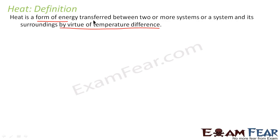Heat is transferred between two objects. When we talk of system and surroundings: system means any object which is under consideration — the particular object under our observation. Anything else other than the system is surroundings. For example, if a cup of coffee is lying on the table and I want to measure its temperature, that cup of coffee is my system, and the table, the chair, the person standing beside it — anything around it is the surroundings.